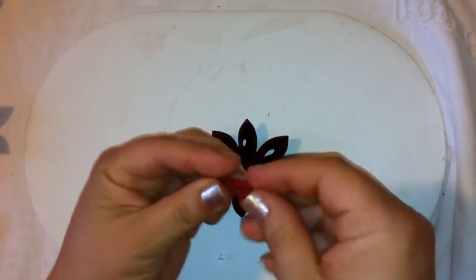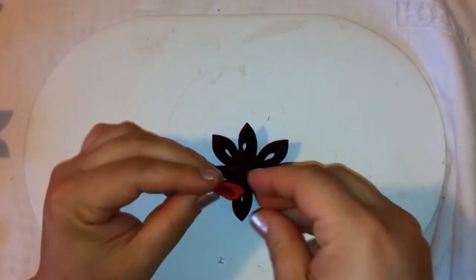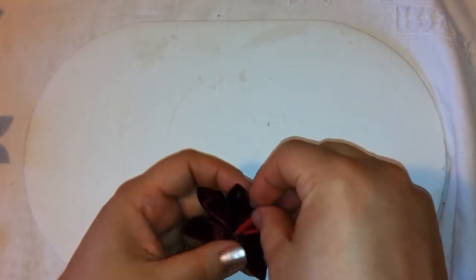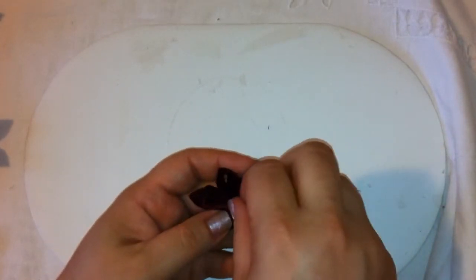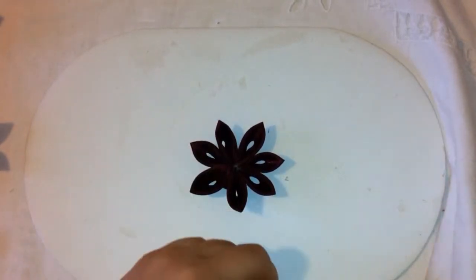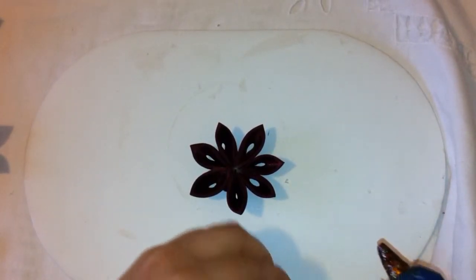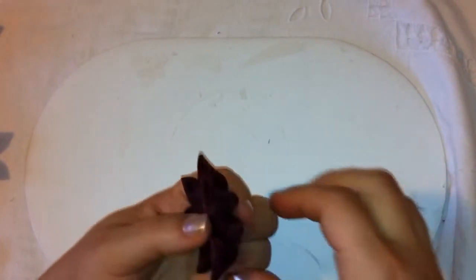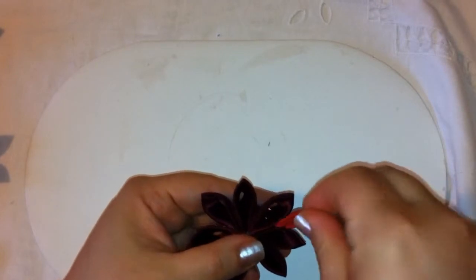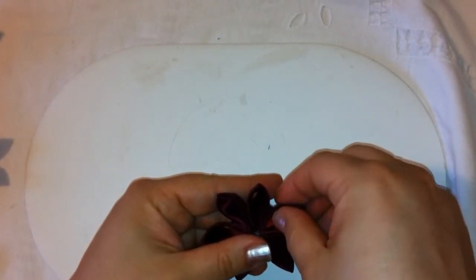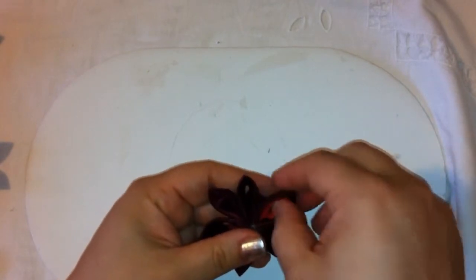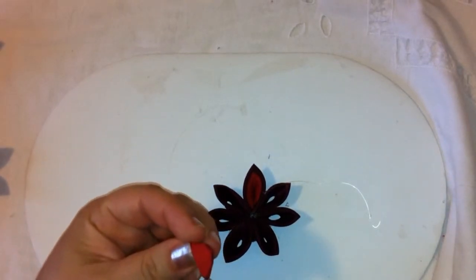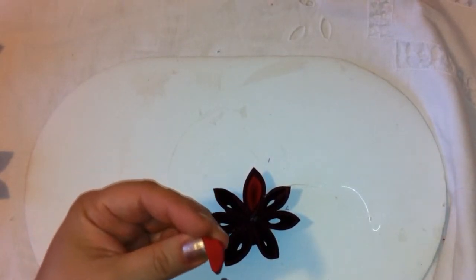So I am going to go ahead and start adding the center. Here's where you have to be more careful that you don't glue the outside. So let's go ahead and add a little bit of glue directly on the inside here and I am going to insert this just like that and I am going to keep doing it for all 7 petals.